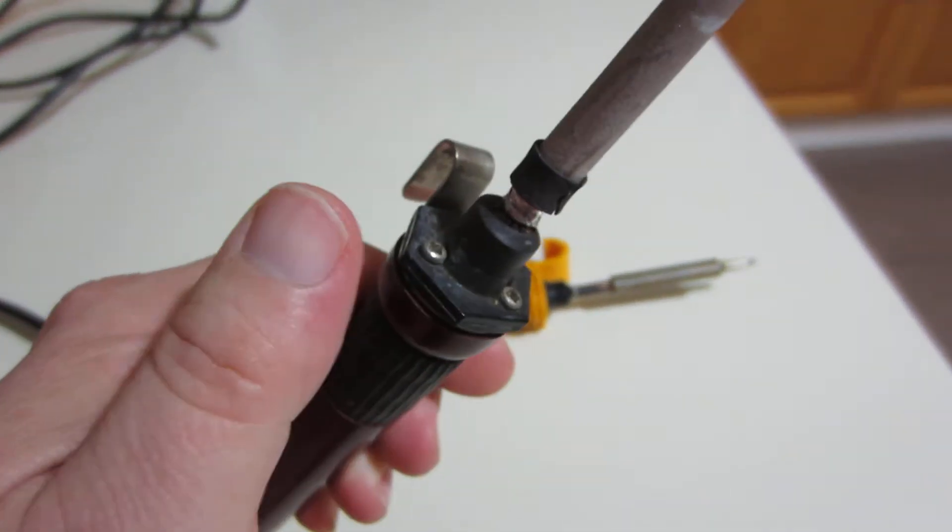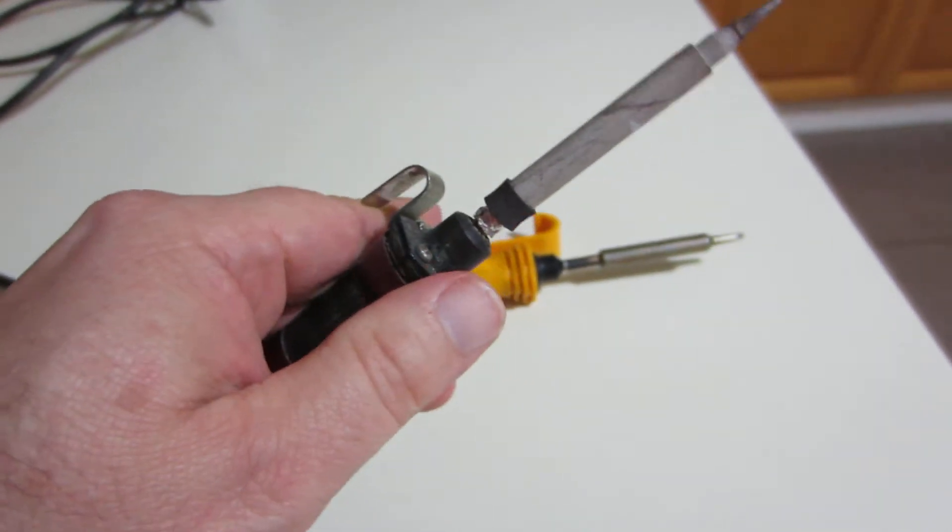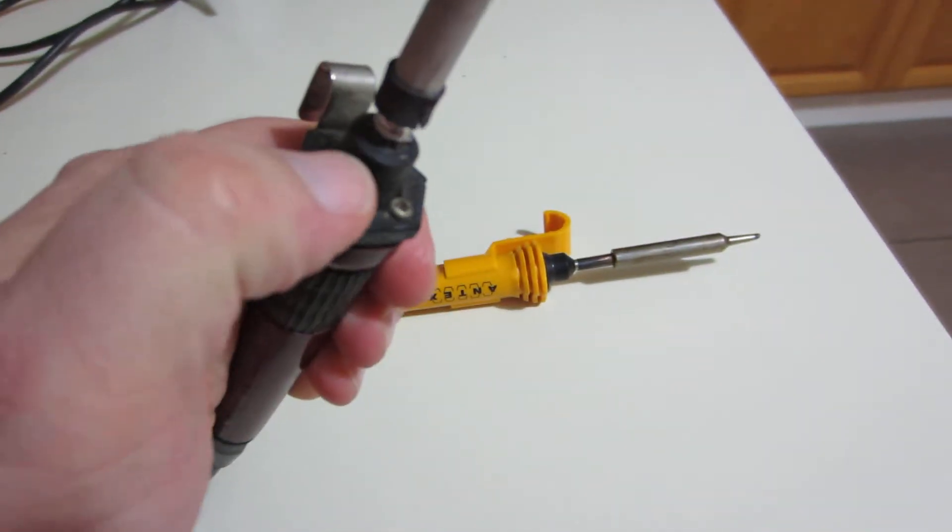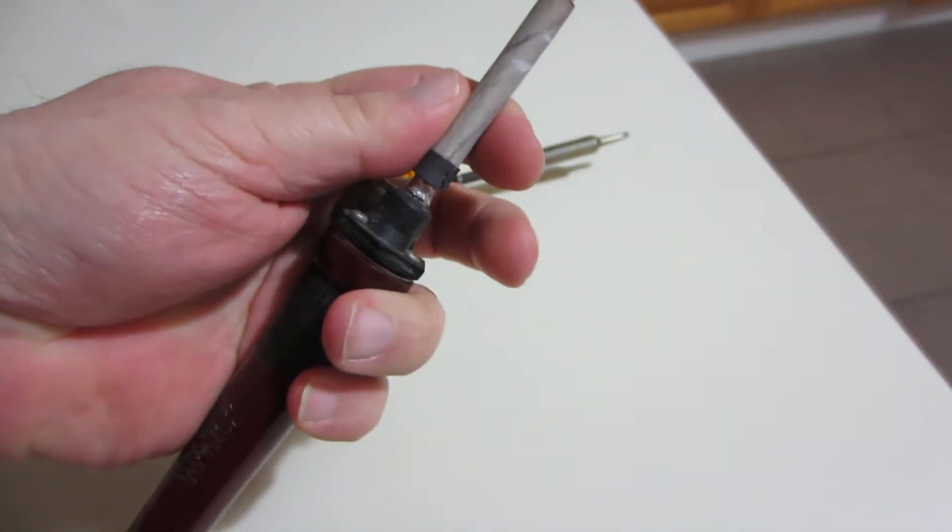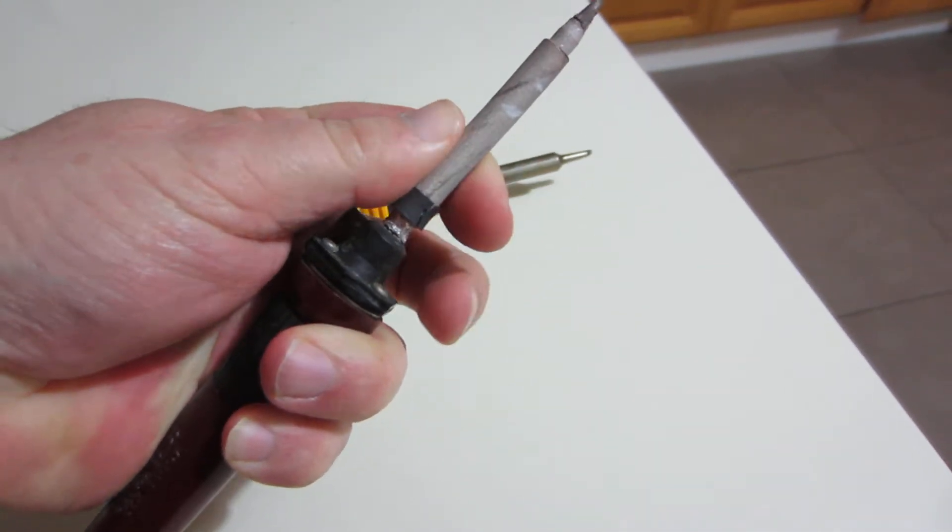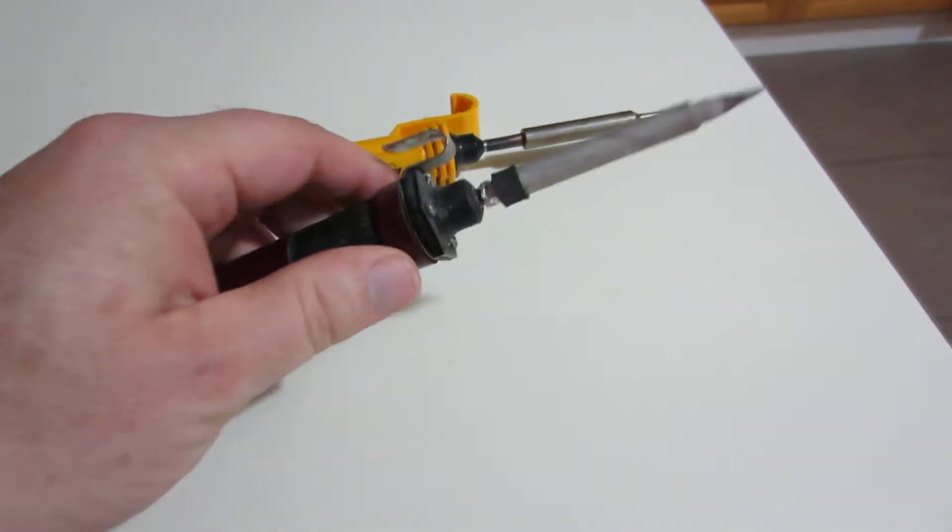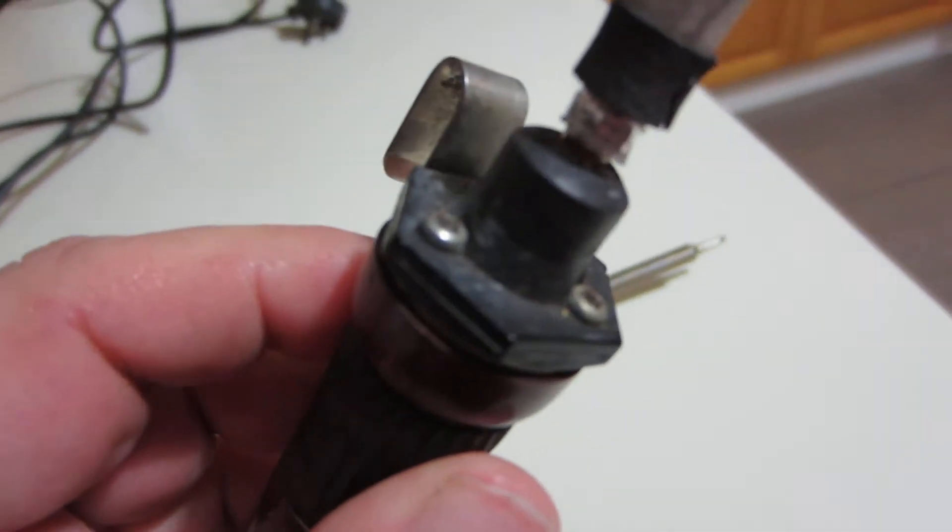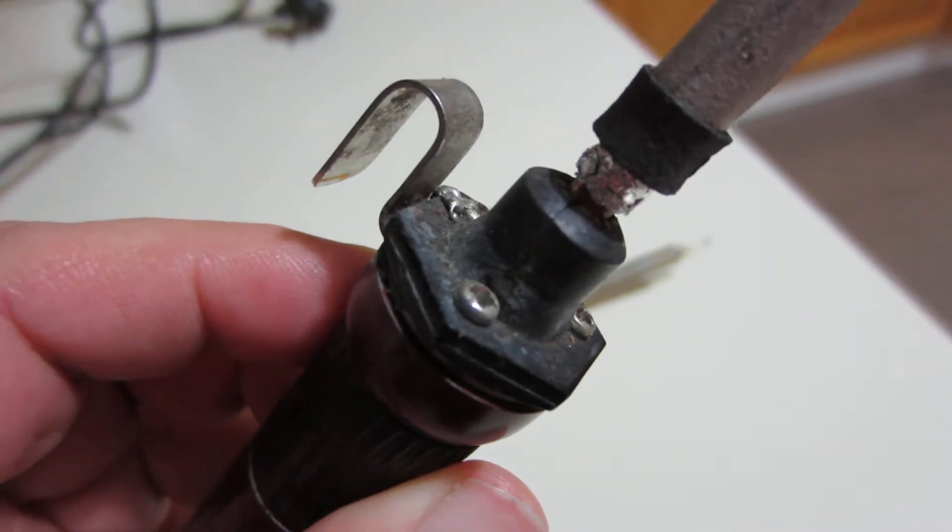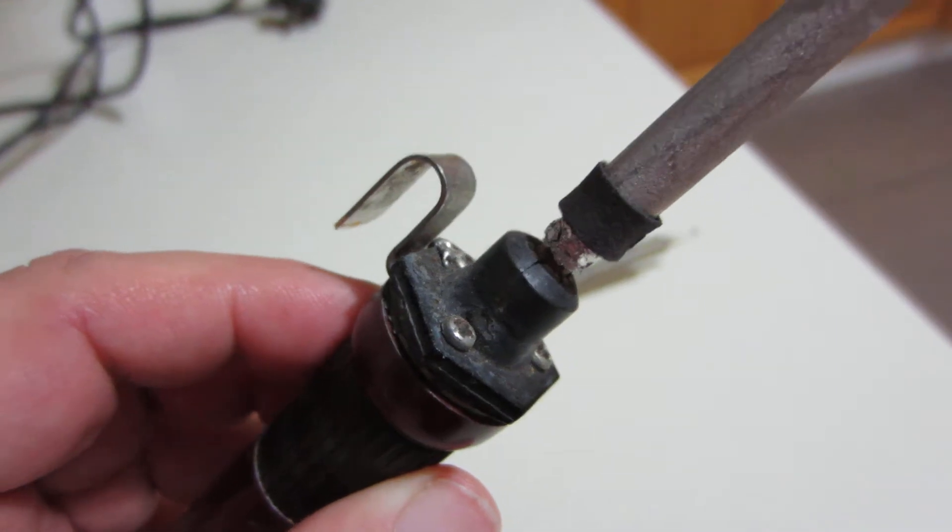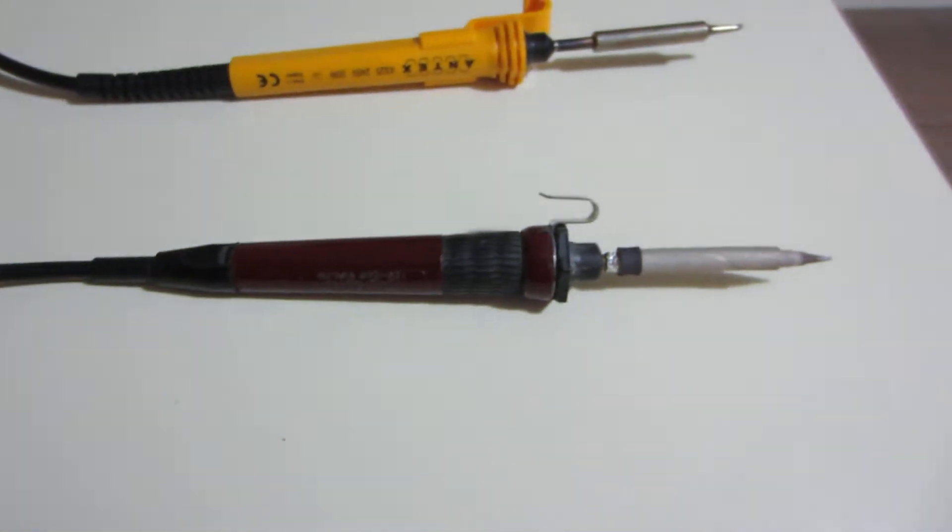You notice on the older unit there are actually screws securing the element unit into the iron, and it's actually developed cracks just around here. I don't know if you can see, but that's actually moving sideways quite a lot just at that point there. There are fat cracks, I think you can possibly just make them out there. So the end of the iron is now quite floppy. It still works perfectly, I can still solder with it.